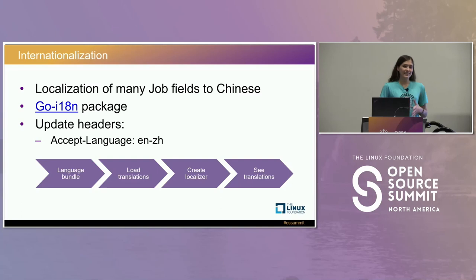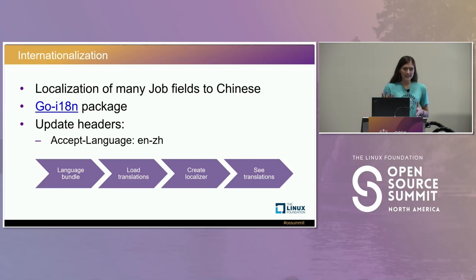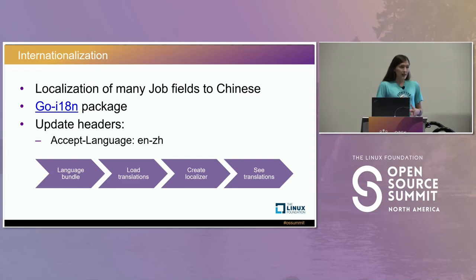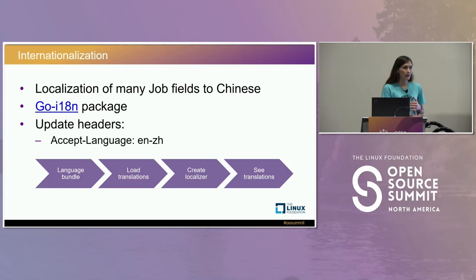Internationalization — i18n — stands for the 18 letters between the 'i' and 'n' in the word. We used the Go i18n package to localize pipeline status, job status, and error detail information. In our Go microservices, we added a language bundle, loaded Chinese translations worked on with an internationalization team, created a localizer for our handlers, and responded with translated data whenever the Accept-Language header matched Chinese.